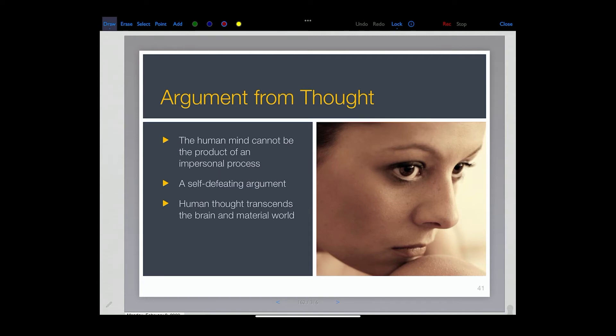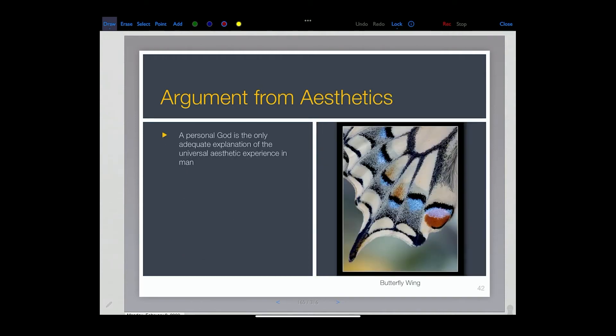It transcends the brain, transcends the material world. We cannot only think about the future, we can think about the process of thinking about the future. And so the reality is then there are all these things that we have, and even from aesthetics, and I've been getting more and more into this, the idea of aesthetics, of beauty. A personal God is the only adequate explanation of the universal aesthetic experience that we possess.